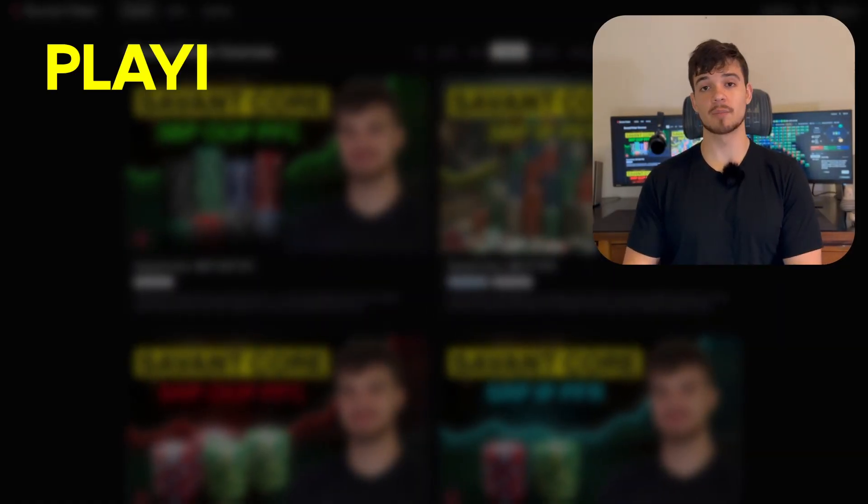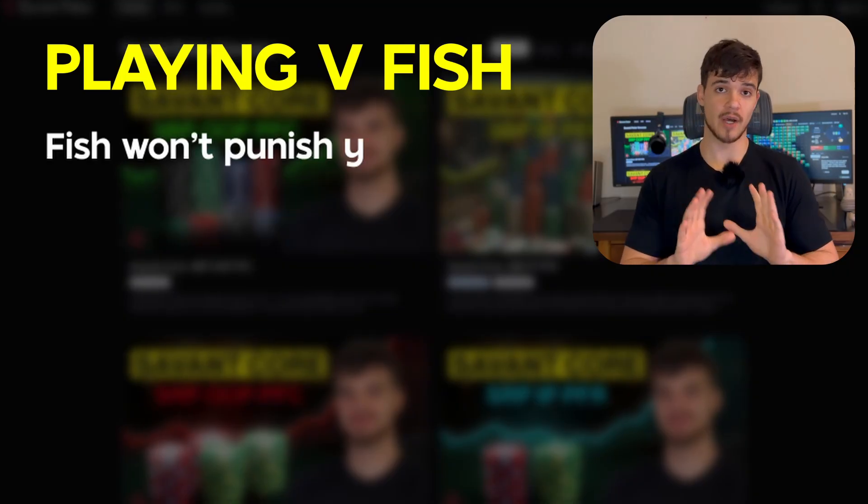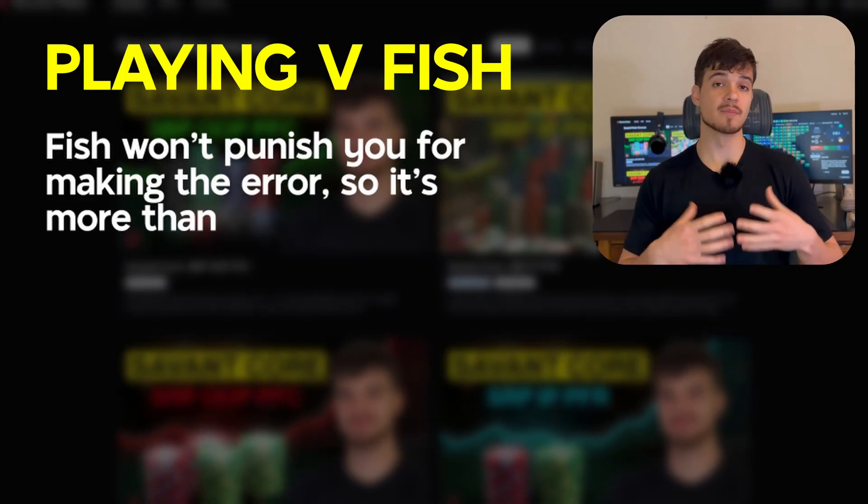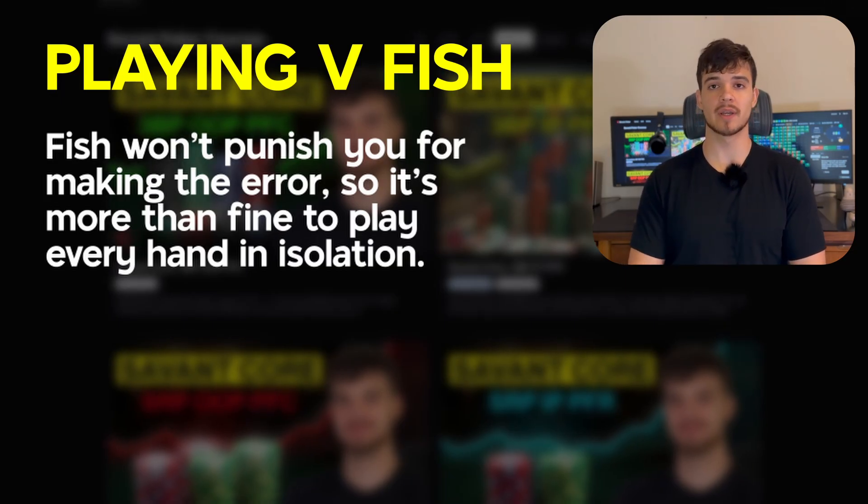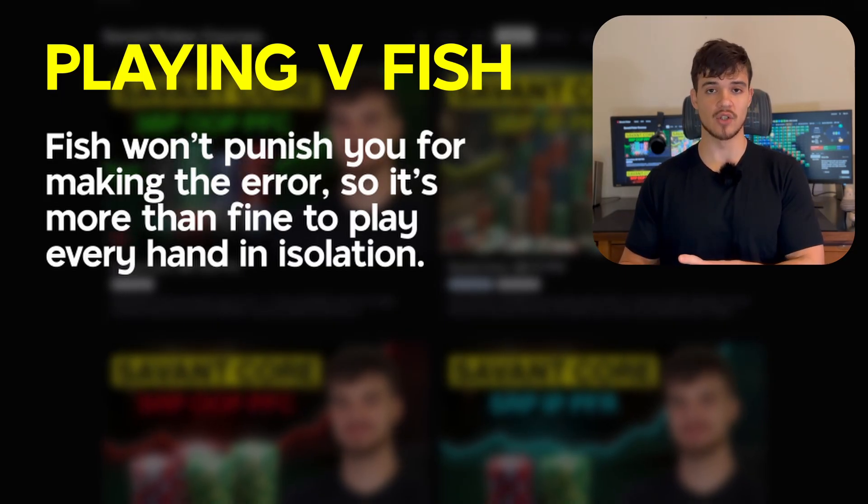Betting strong hands and checking medium-strength hands doesn't just feel like the right way to play. It actually is the right way to play in many cases. And that's exactly why this mistake is made both at the lowest and at the highest stakes. But this begs the final important question. Should you be making it? And unfortunately, the answer is not a simple yes or no. You should be playing this way in many cases, like when playing against Fish. Fish will not punish you for making the error, so it's more than fine to just play every hand in isolation, not worrying about the downstream implications of an imbalanced checking range.